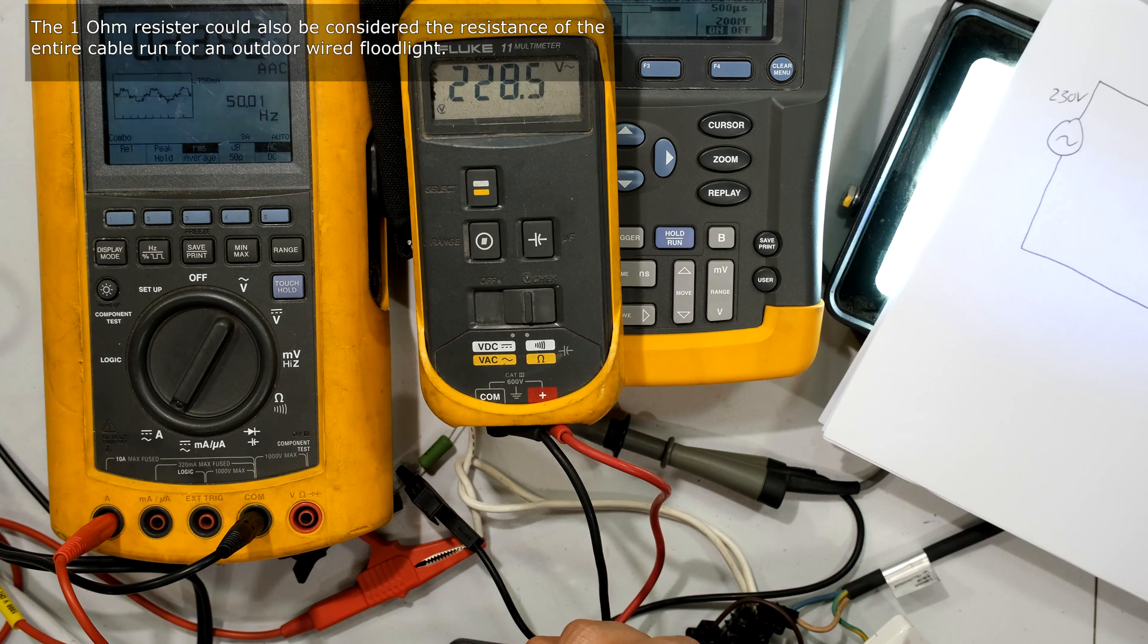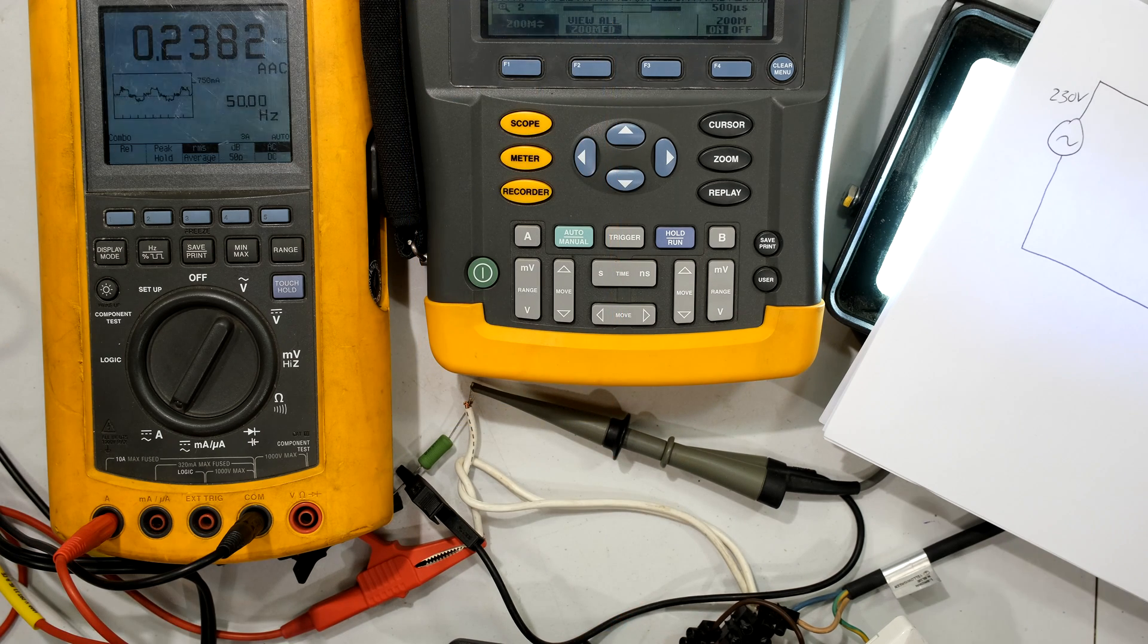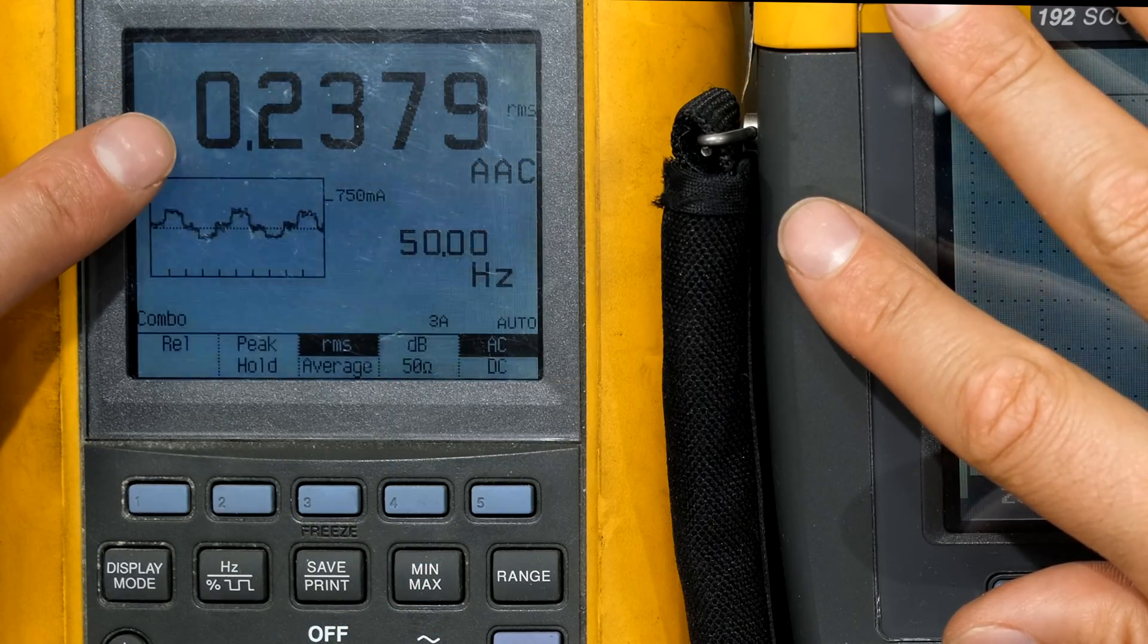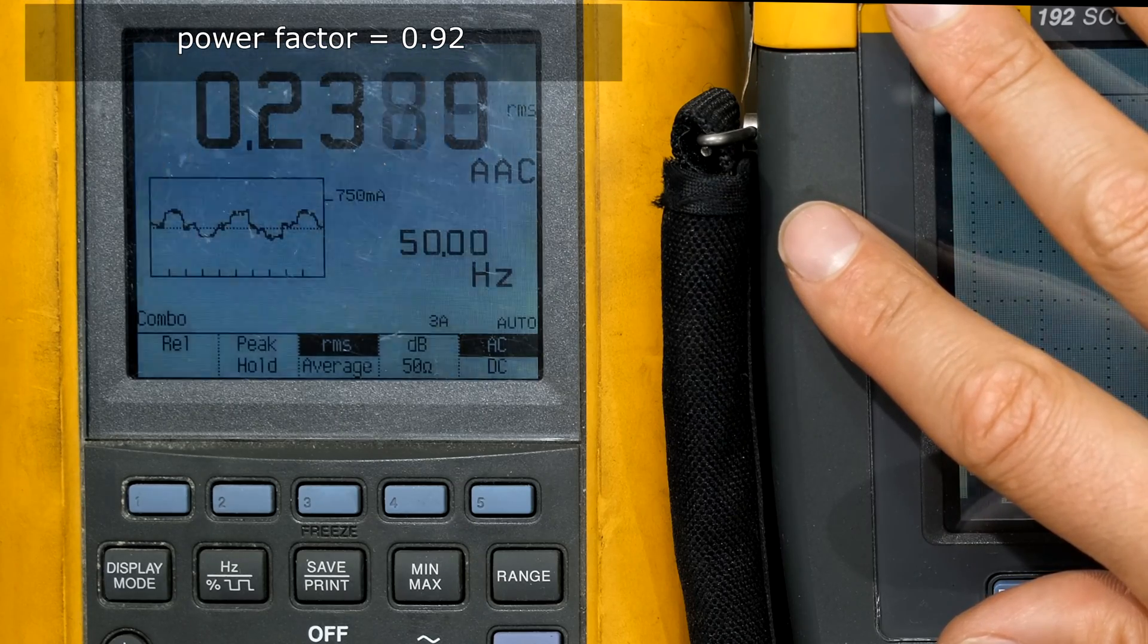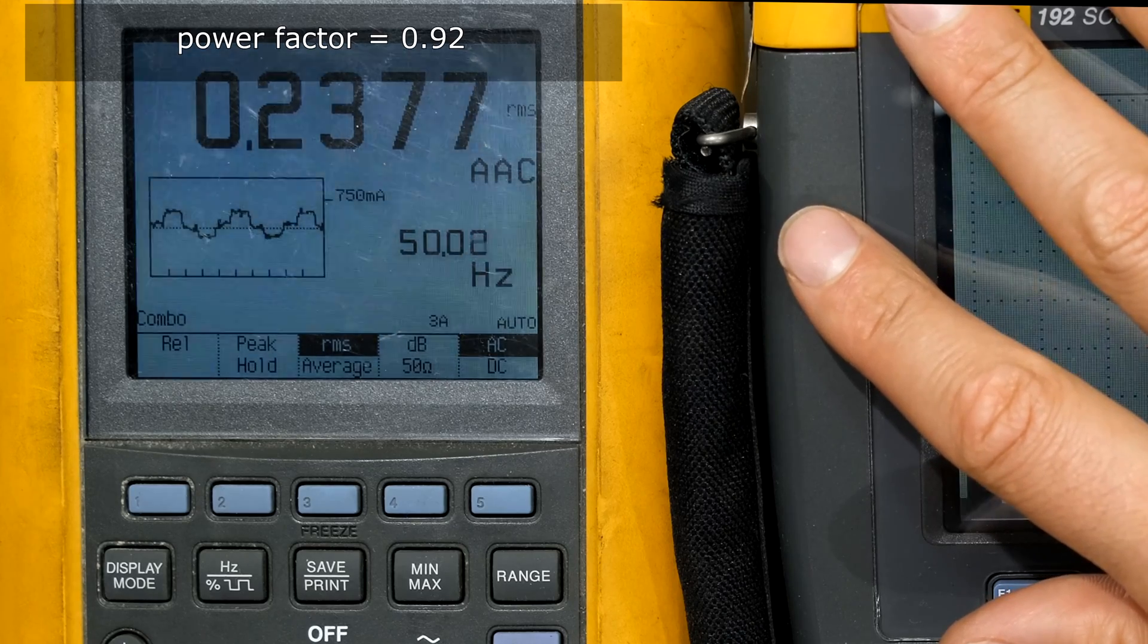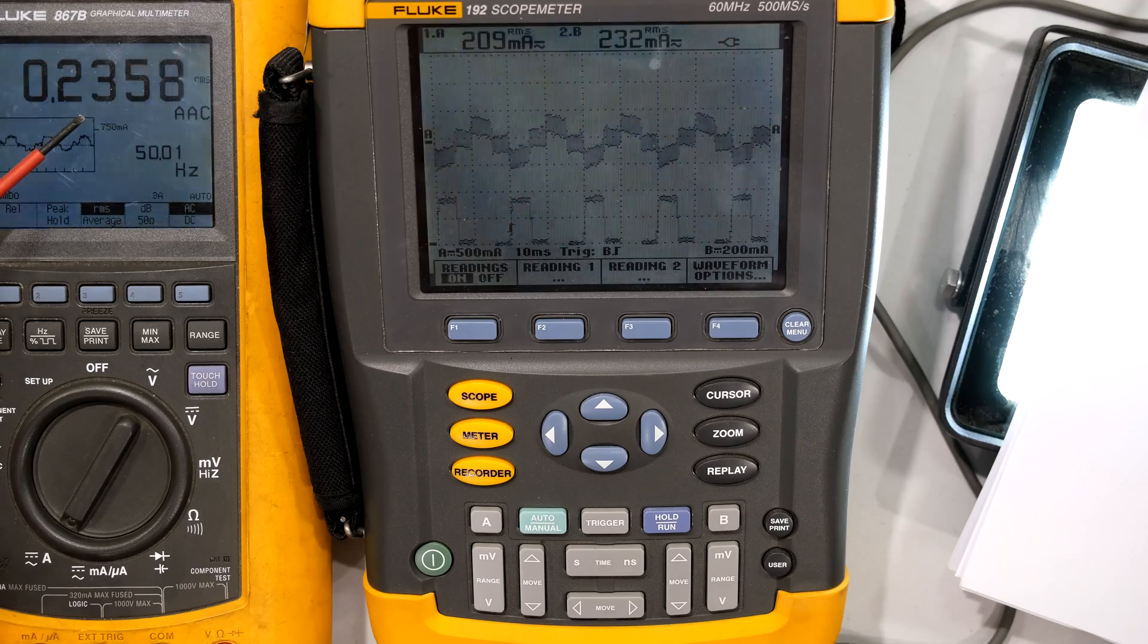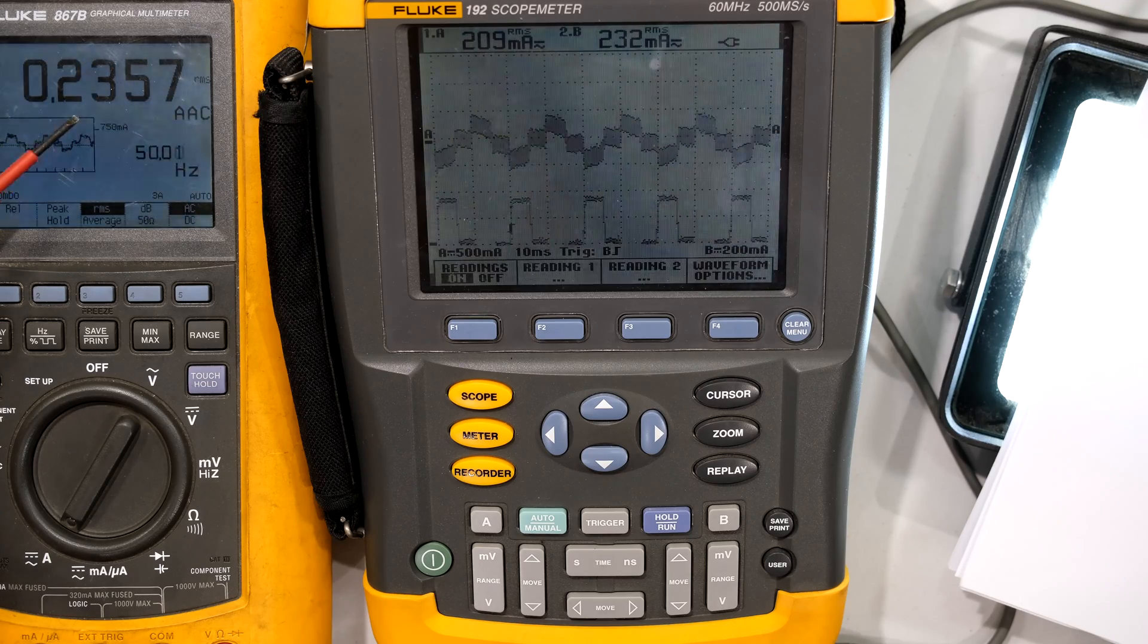Just to get a voltage reading, the voltage is 228.5 volts, so it's quite close to 230, and the light is on. The nominal AC current is 0.238 amps, so 238 milliamps for this light while it is at steady state. You can see the frequency there is 50 hertz, this is recorded in South Africa. The nominal current which I'll take as the reference measurement is 235 milliamps.